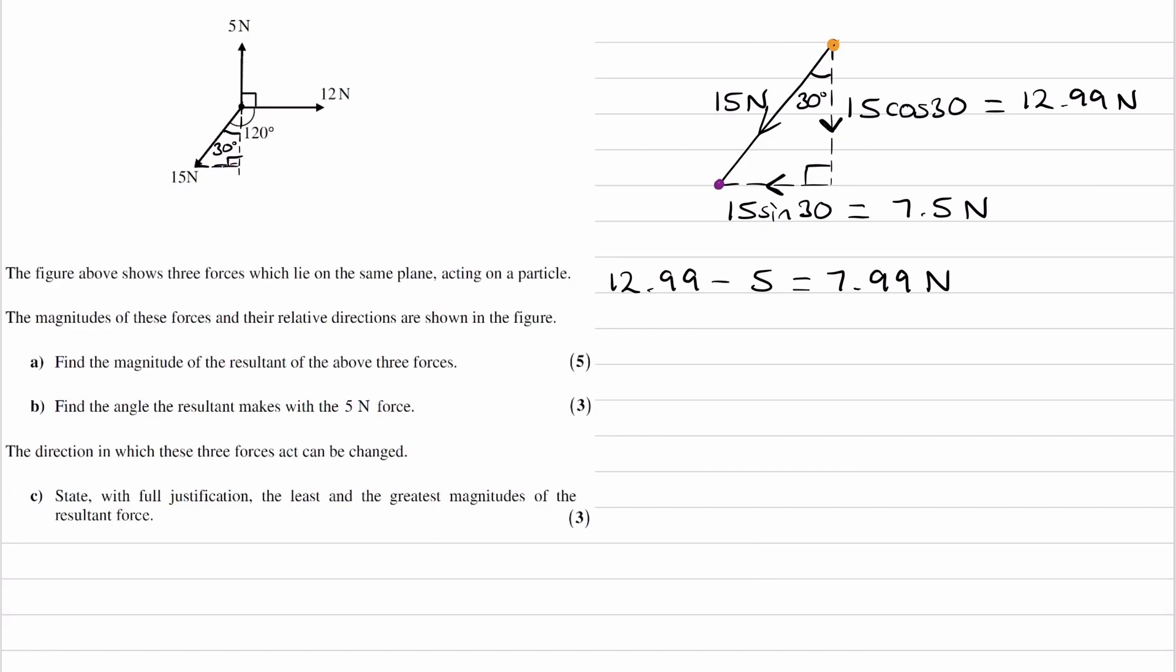And then horizontally, we have 12 Newtons towards the right, and we have 7.5 Newtons towards the left. So take them away, that's 4.5 Newtons, that will be the overall force towards the right. 12 Newtons is bigger than the 7.5 towards the left, so therefore the resultant force horizontally is towards the right.